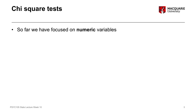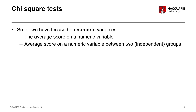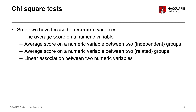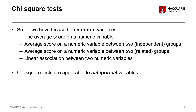So far throughout the semester we've really been focusing almost solely on numeric variables — variables that have some kind of numeric scale or numeric property. We've done a number of different kinds of tests: comparing an average score to an external population, looking at averages between two independent or two related groups, and last week looking at a linear association between two numeric variables. Today requires a shift in thinking because we're focusing solely on categorical variables.